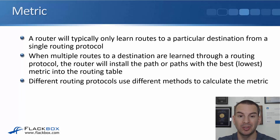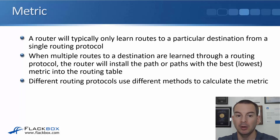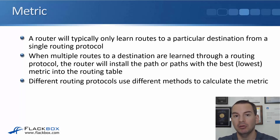A router will typically only learn routes to a particular destination from a single routing protocol. It's not normal for an organization to be running multiple different routing protocols. When multiple routes to a destination are learned through a routing protocol, the router will install the path or paths with the best, meaning the lowest, metric into the routing table. Different routing protocols use different methods to calculate that metric.